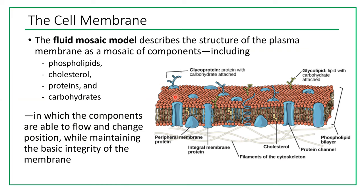On the surface of the cell membrane we have glycoproteins and glycolipids. Together, this is called the glycocalyx. It is used for recognition of cells — your cells have a specific glycocalyx on the surface, and your immune system can recognize your cells and prevent white blood cells from attacking your own cells.